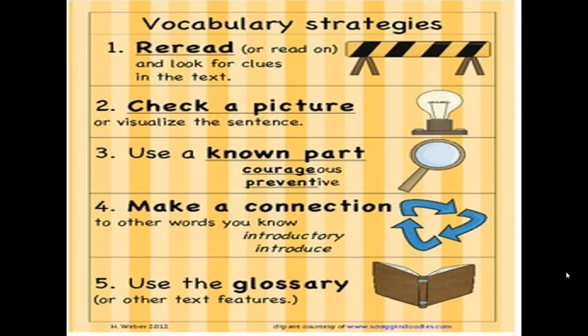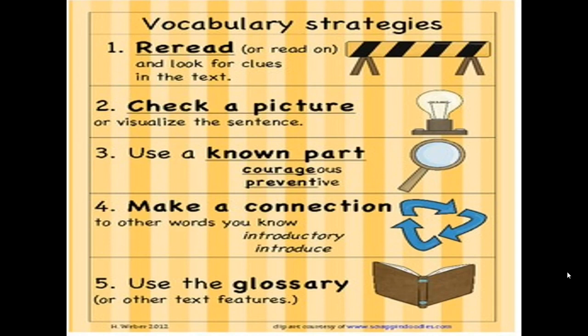Since our strand for the week is content area vocabulary, we want to look at vocabulary strategies. Number one: reread or read on, and look for clues in the text. Number two: check a picture or visualize the sentence. Number three: use a known part — for example, 'courageous' contains 'courage,' and 'preventative' contains 'prevent.' Number four: make a connection to other words you know, such as 'introductory' or 'introduce.' You can also use the glossary, dictionary, or other text features.